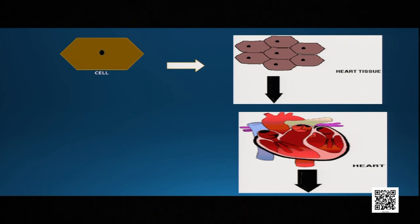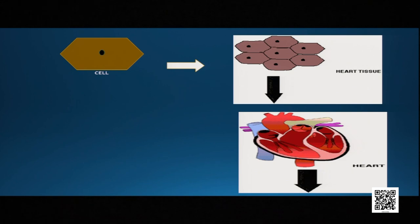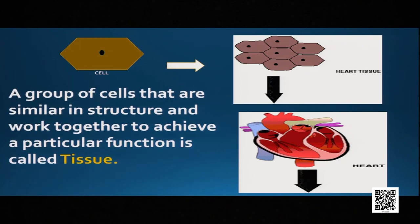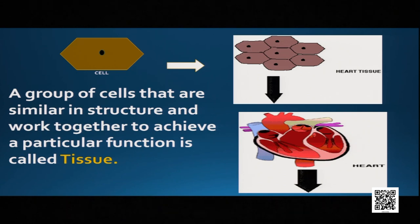Tissues again combine together to form organs, and organs combine together to form organ systems, and at last the organism. So let us find out what is a tissue. A tissue is nothing but a group of cells that are similar in structure and work together to achieve a particular function.